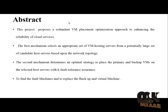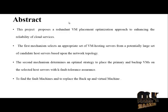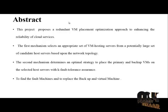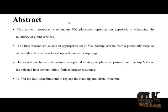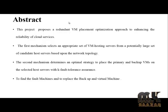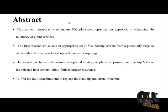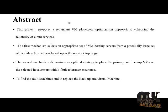The project abstract is: this project proposes a redundant virtual machine placement optimization approach to enhancing the reliability of cloud services. The first mechanism selects an appropriate set of virtual machine hosting servers from a potentially large set of candidate host servers based upon the network topology. The second mechanism determines an optimal strategy to place the primary and backup virtual machines on the selected host servers with fault tolerance assurance, to find the faulted machines and replace them with backup virtual machines.